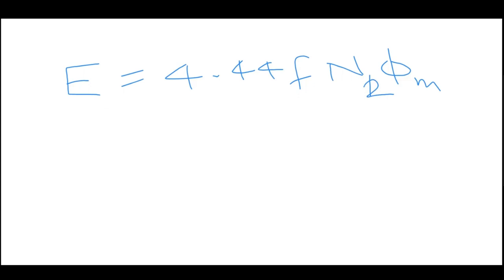In general, this is the formula. We can observe that a few things are common: 4.44 F, phi M, it is common. So what we can derive from this is that E1 upon N1 is equal to E2 upon N2.